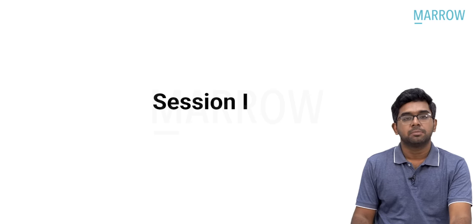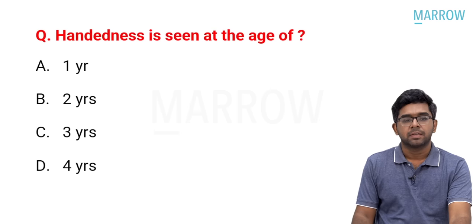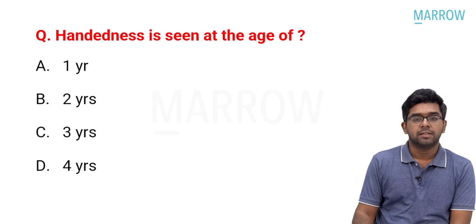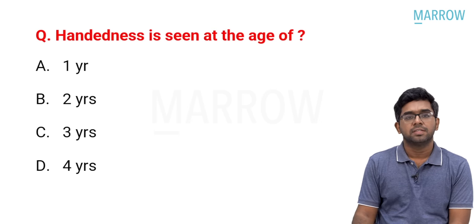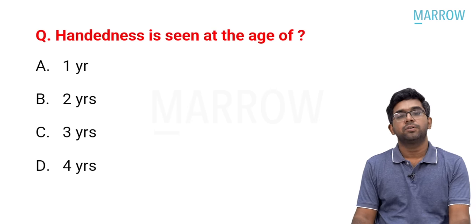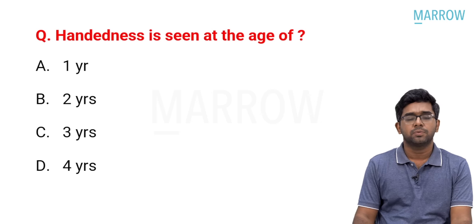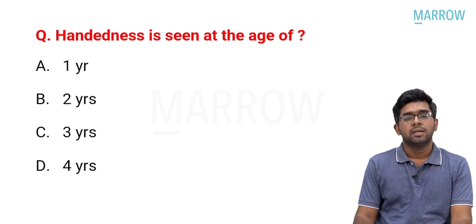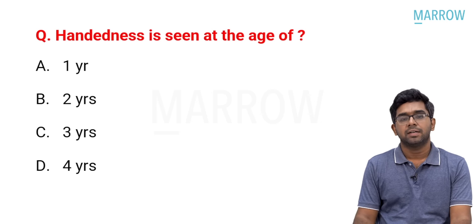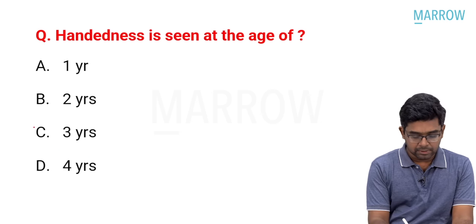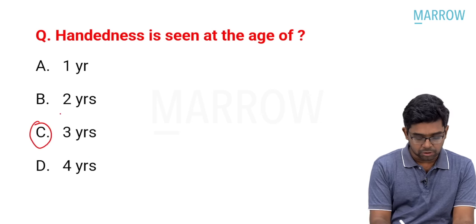Let us get started with the questions which were asked in the first session. Session number one, this was the first question: Handedness is seen at the age of. This is a question related to developmental milestone. It is one of the repeat questions as well. The answer is straightforward — it is three years of age. That is when handedness is usually seen.